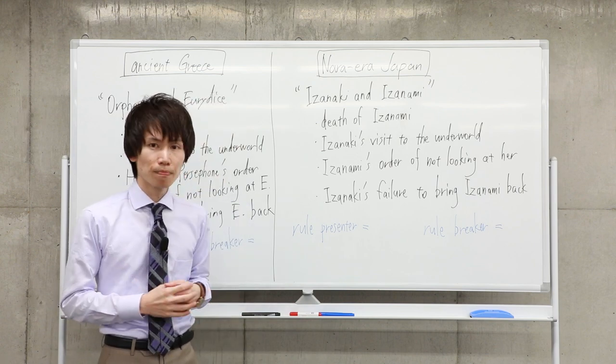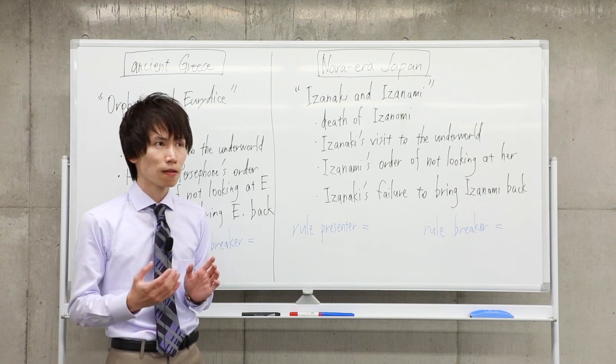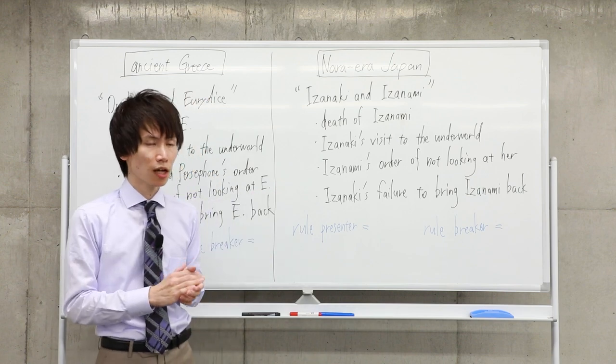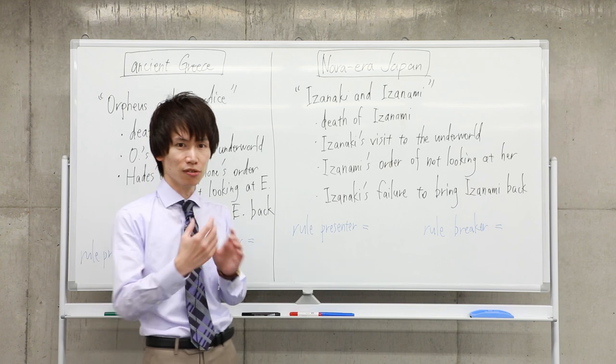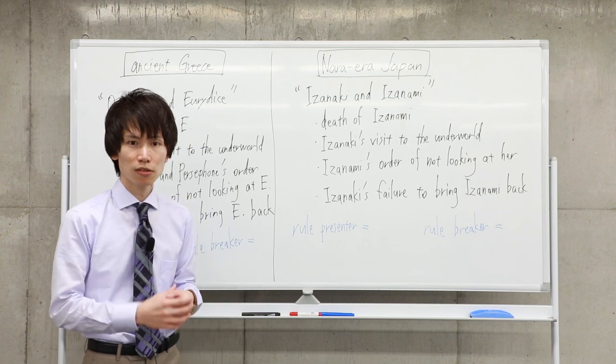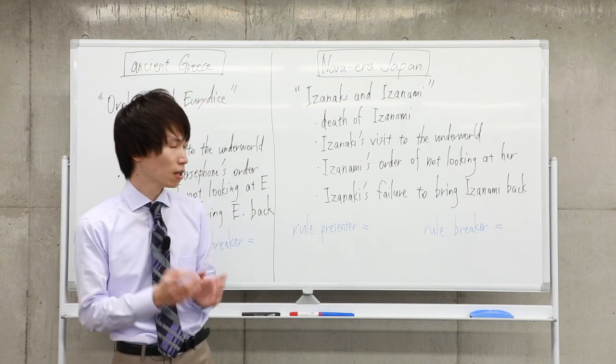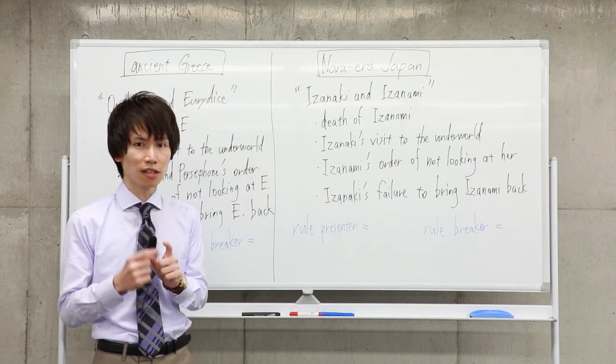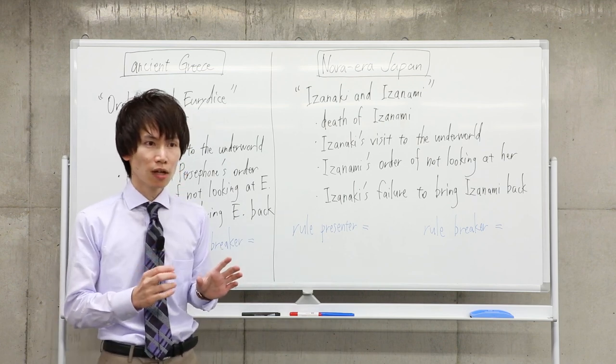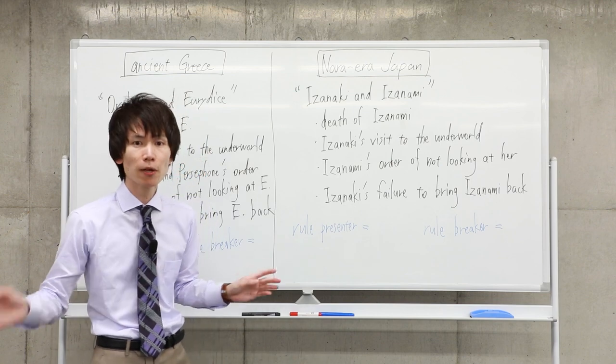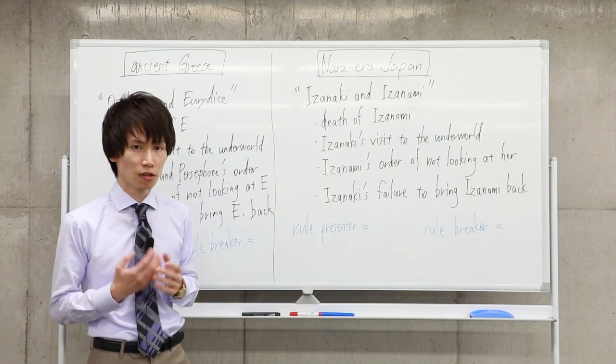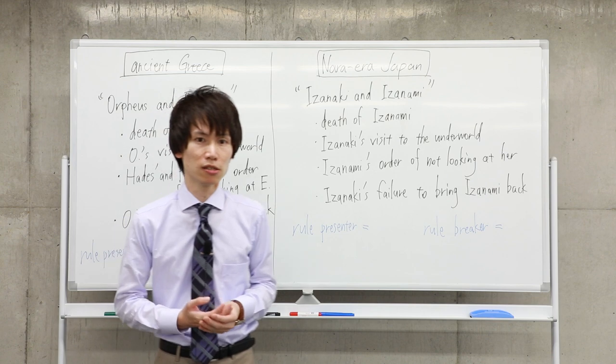So Izanami says to Izanaki that I want to go back to the upper world, but I can't. I want to negotiate with the gods of the underworld, so please wait. Her husband agrees with it. But there is again a qualification. While she is preparing to return to the upper world, Izanaki must not look at her. And Izanaki agrees with the idea.